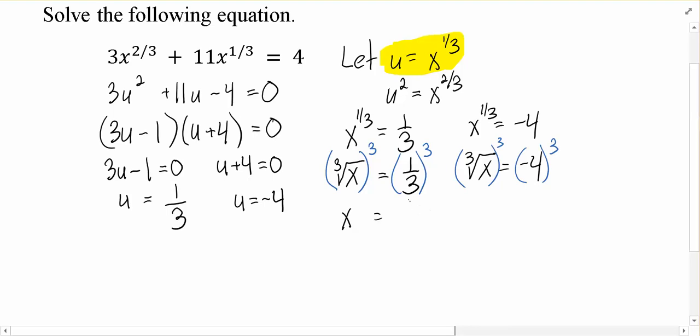This gets me x equals 1 over 27, x equals negative 64. And those are my two answers.